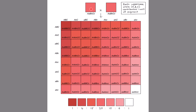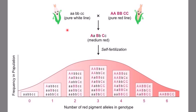The Punnett square is drawn using the F1 hybrids as parents for the F2 generation. Each parent gives eight different gametes, so an 8×8 Punnett square is drawn, giving a possibility of 64 progenies. The genotypes of all these progenies can be predicted. To predict the phenotype, we look at the number of uppercase or dominant alleles — A, B, or C. If there is one dominant allele, the color will be lighter.